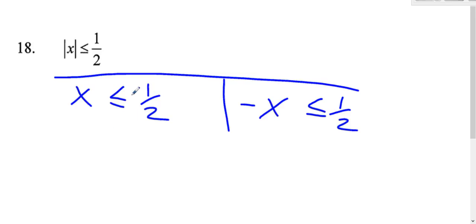So x is less than or equal to one half. That's good. Get x by itself. Divide by negative one. Changes the sign. And since we're dividing by a negative, you have to flip the inequality to negative one half.